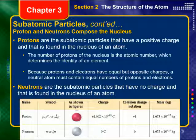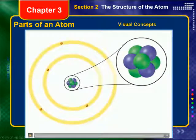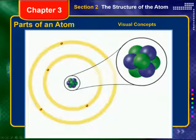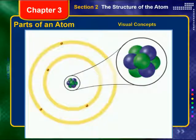The number of protons in an atom is very important because the number of protons in the nucleus is known as the atomic number, which identifies and determines the identity of the element. Because protons and electrons have equal but opposite charges, a neutral atom must contain equal numbers of protons and electrons. Neutrons are subatomic particles that have no charge but are also found in the nucleus. So far we've focused on two locations within the atom: the electron cloud, where you find negatively charged electrons, and the nucleus, where you find positively charged protons and neutrally charged neutrons.